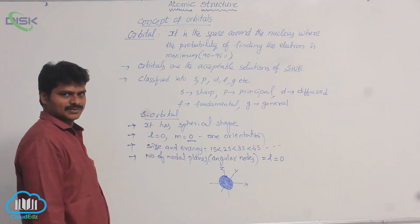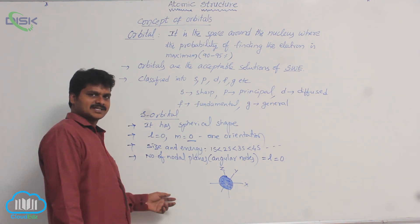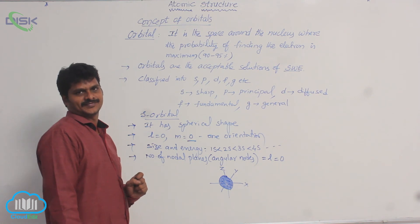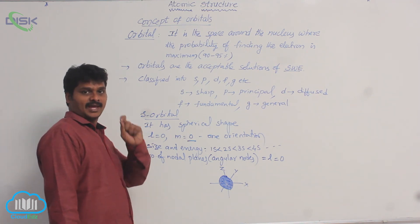So S orbital is a function of distance from the nucleus only. Function of distance from the nucleus only. Let's look at further.